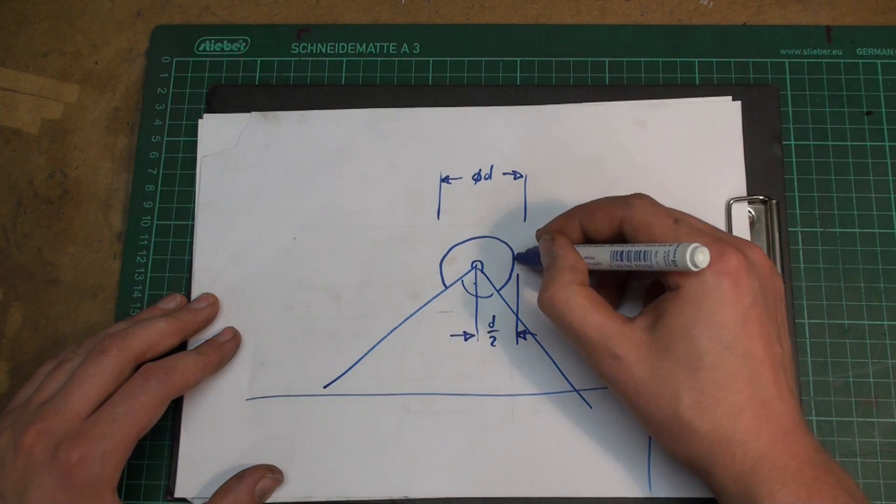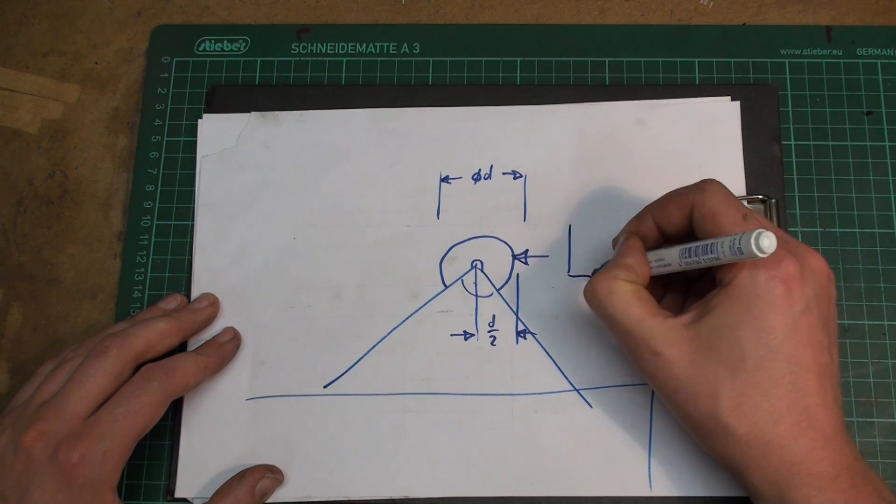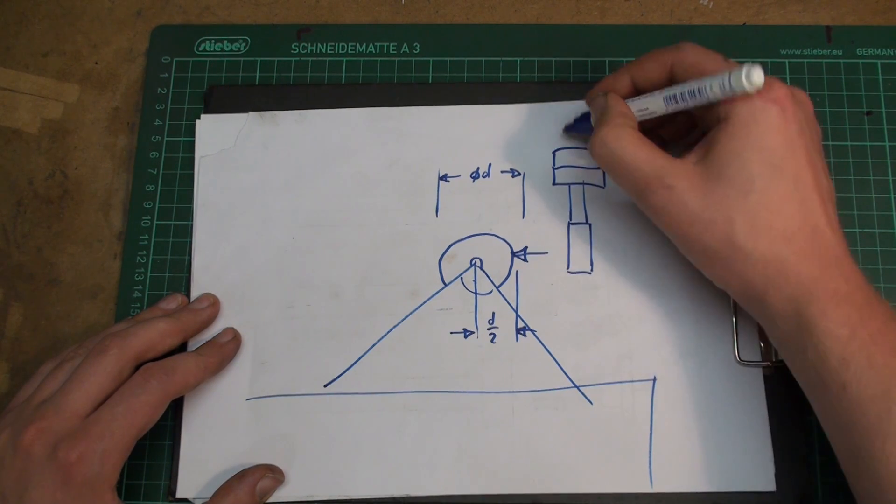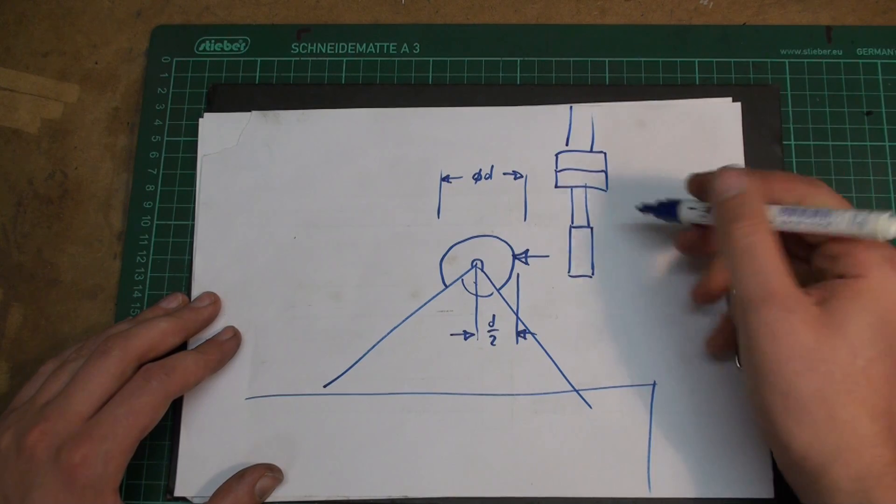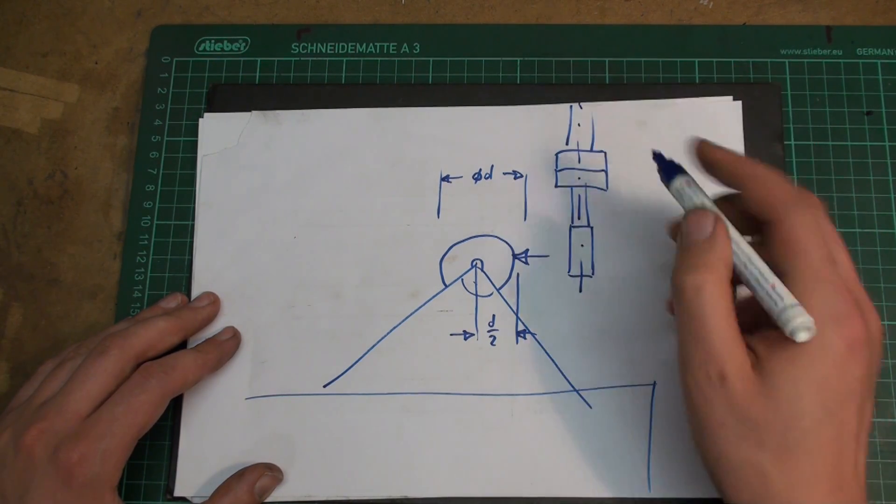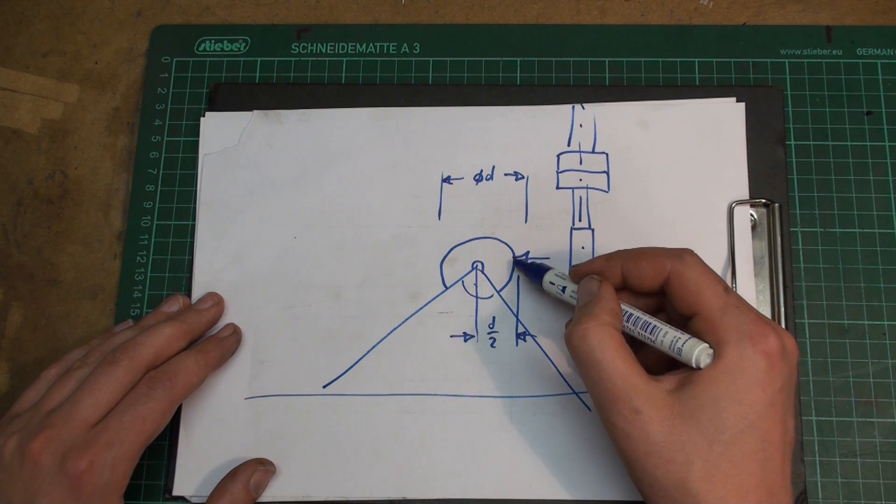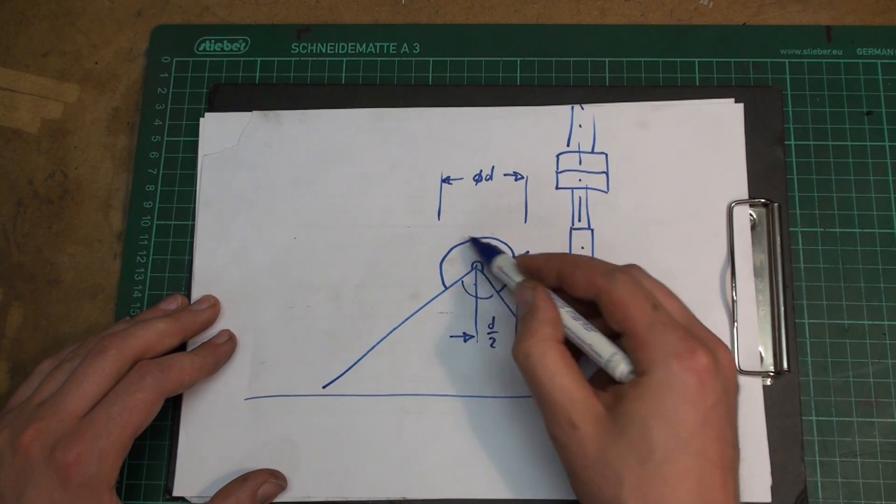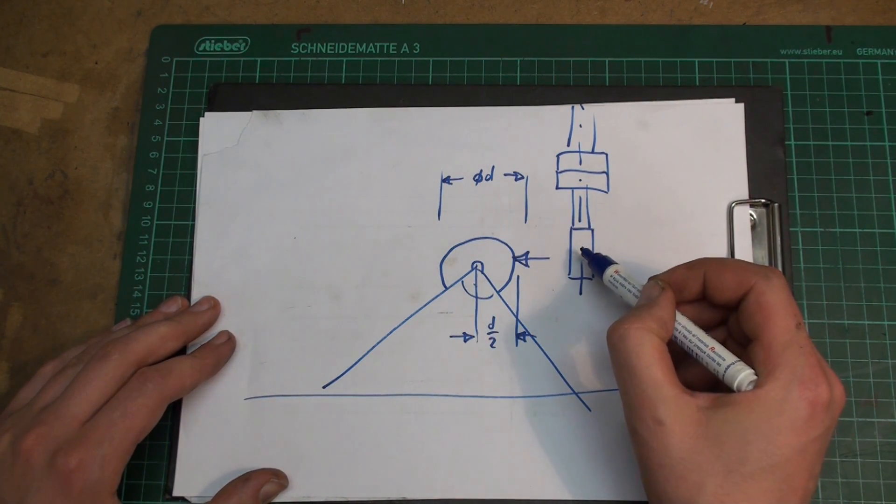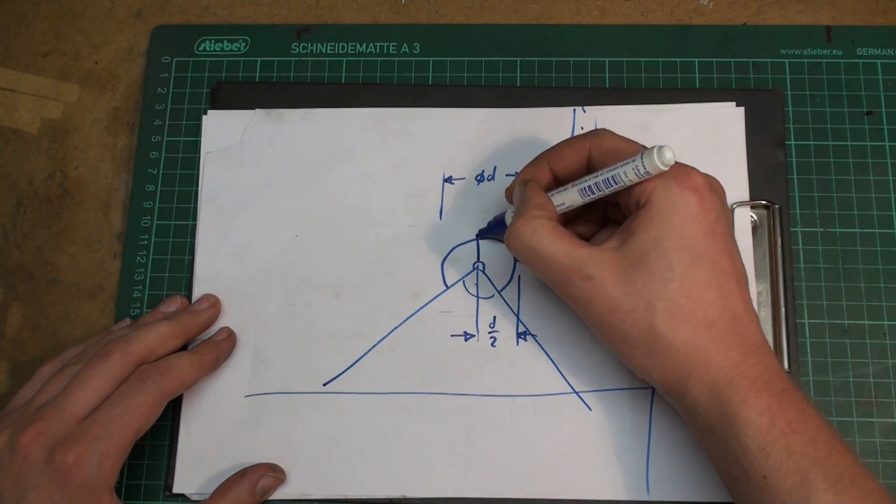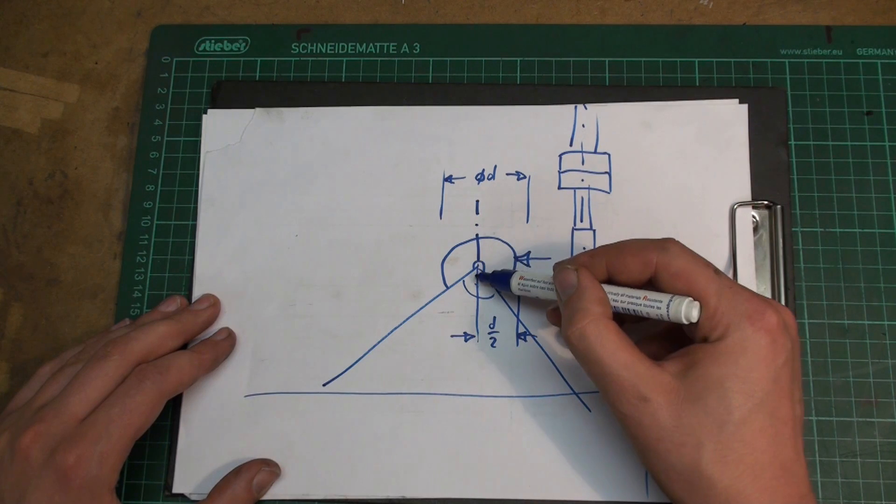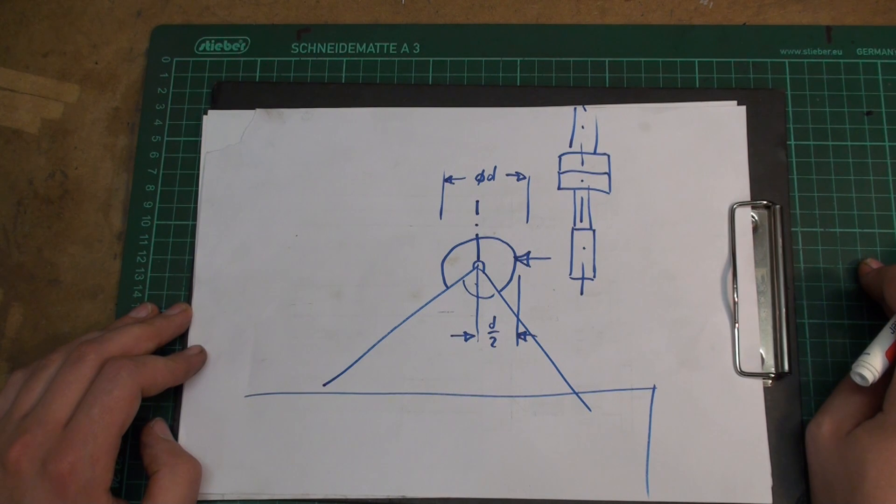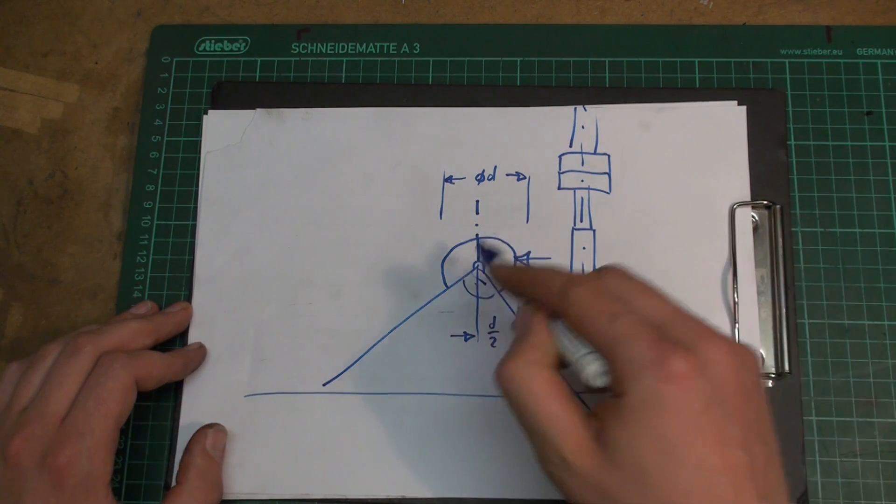So you approach this edge with your edge finder. Touch off on this surface. Move over half the diameter of our little tool and of course half the diameter of your edge finder. And then your spindle is dead on accurate above the edge.